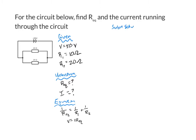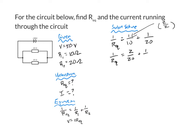Let's go ahead and start by finding REQ. I know that 1 over REQ is equal to 1 over R1, so 1 over 10, plus 1 over R2, which is 1 over 20. I can get a common denominator by multiplying 1 over 10 by 2 over 2, which gives me 1 over REQ is equal to 2 over 20 plus 1 over 20, or 1 over REQ is equal to 3 over 20. To get REQ by itself, I flip my fraction, so REQ is equal to 20 over 3 ohms, or 6.7 ohms in decimal form.